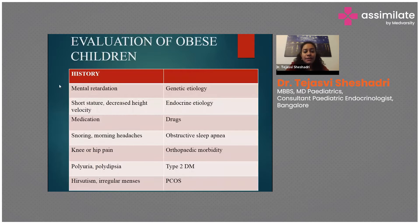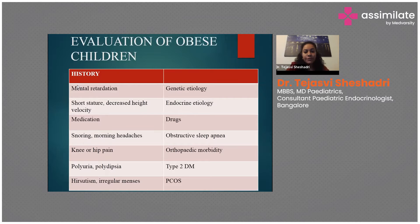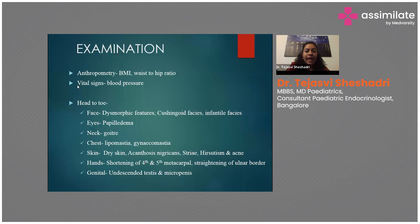Mental retardation favors a genetic cause. Short stature or decreased height velocity over six to twelve months favors an endocrine cause. Always ask about medication use. Look for complications: snoring or morning headache suggests obstructive sleep apnea; knee or hip pain warrants investigation; polyuria and polydipsia favor type 2 diabetes; irregular menses or hirsutism favors PCOS.